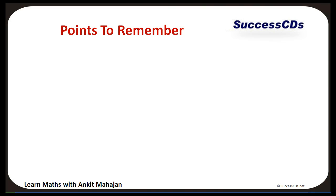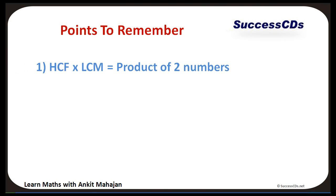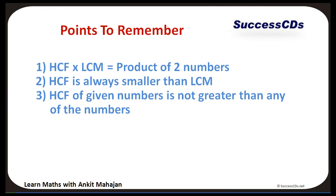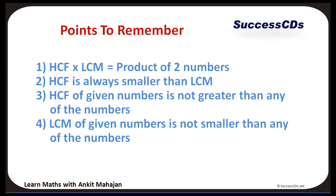Here are very important points to remember. First, HCF x LCM is always equal to the product of the two numbers. Second, HCF is always smaller than LCM — this is a very common mistake students make, so please remember it. Third, HCF of given numbers is never greater than any of the numbers. Fourth, LCM is never smaller than any of the numbers.